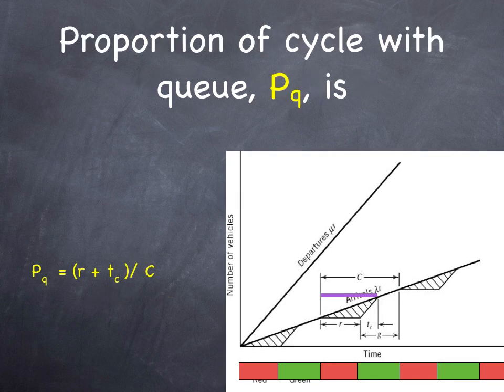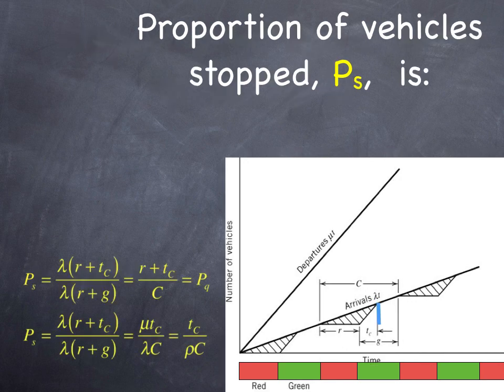The proportion of the cycle for which there is a queue is the red time plus the time to clearance divided by the cycle length. The total cycle length is the red time plus the effective green time. The proportion of vehicles stopped, we're looking at the height of the triangle. That is, r plus t sub c over c.